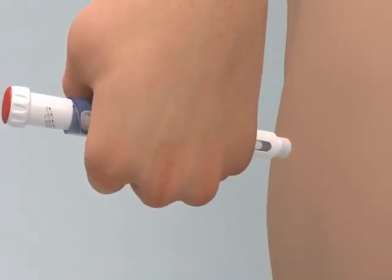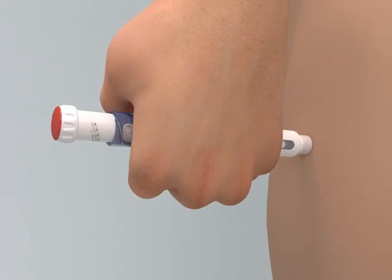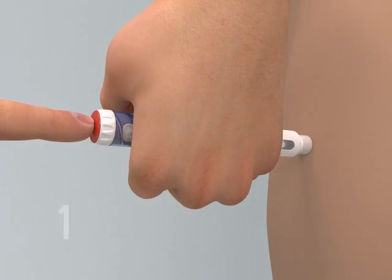After inserting the pen needle, push the injection button in as far as it will go and press firmly. You'll hear a clicking sound as your dose is being injected. Continue to press firmly for five seconds before removing the needle from your skin. Stop pressing before you carefully remove the pen needle from the skin.